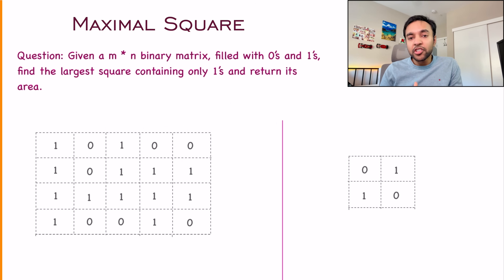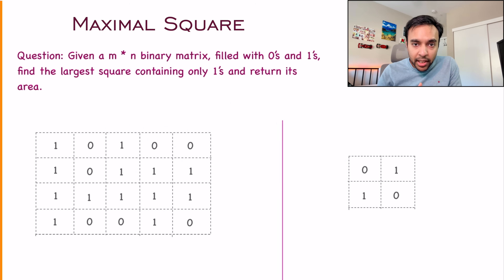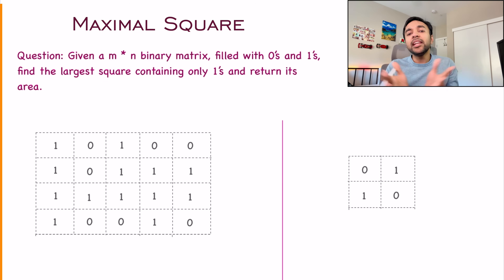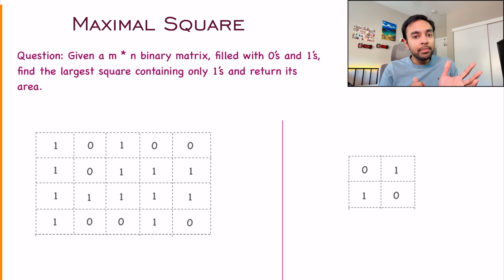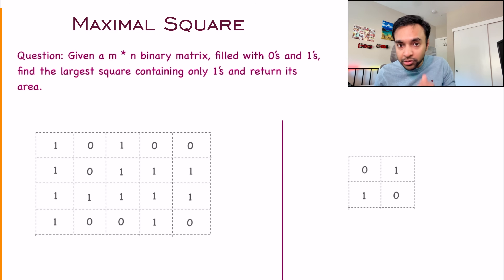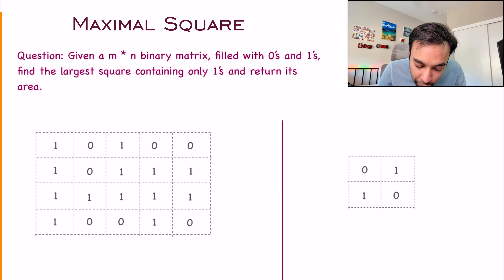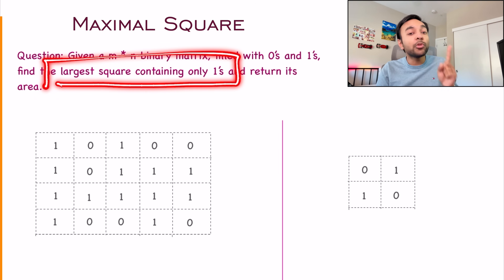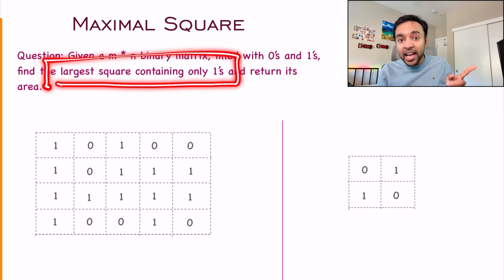First of all, let's quickly make sure that we are understanding the problem statement correctly. In this problem, you are given an m cross n binary matrix, which simply means the matrix consists of only zeros and ones. Given this matrix, you have to find out the largest square that contains only ones and return its area.